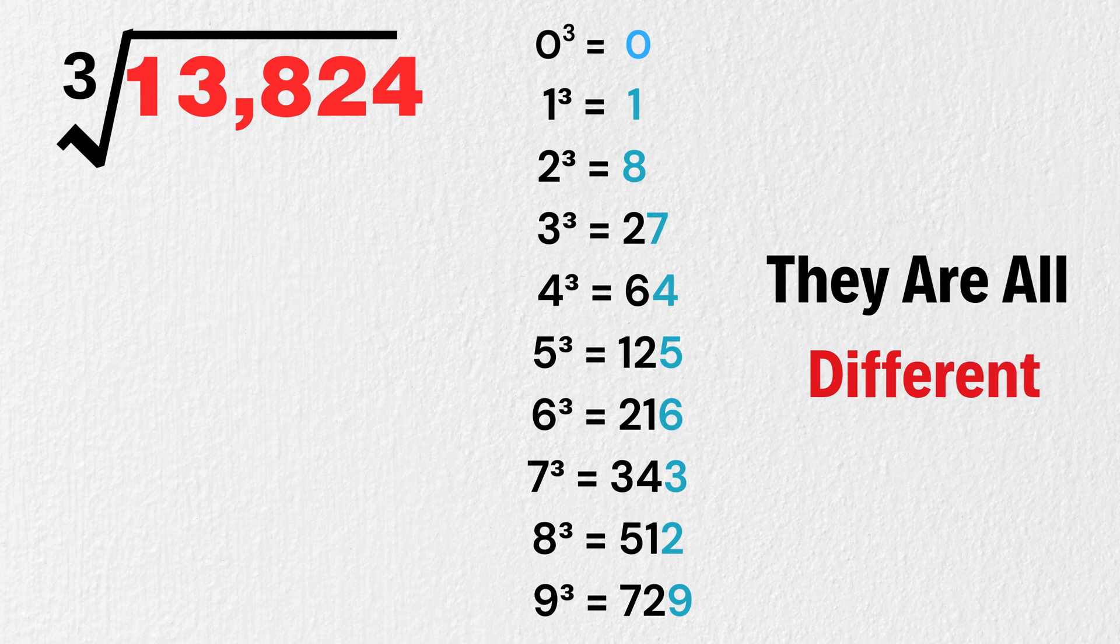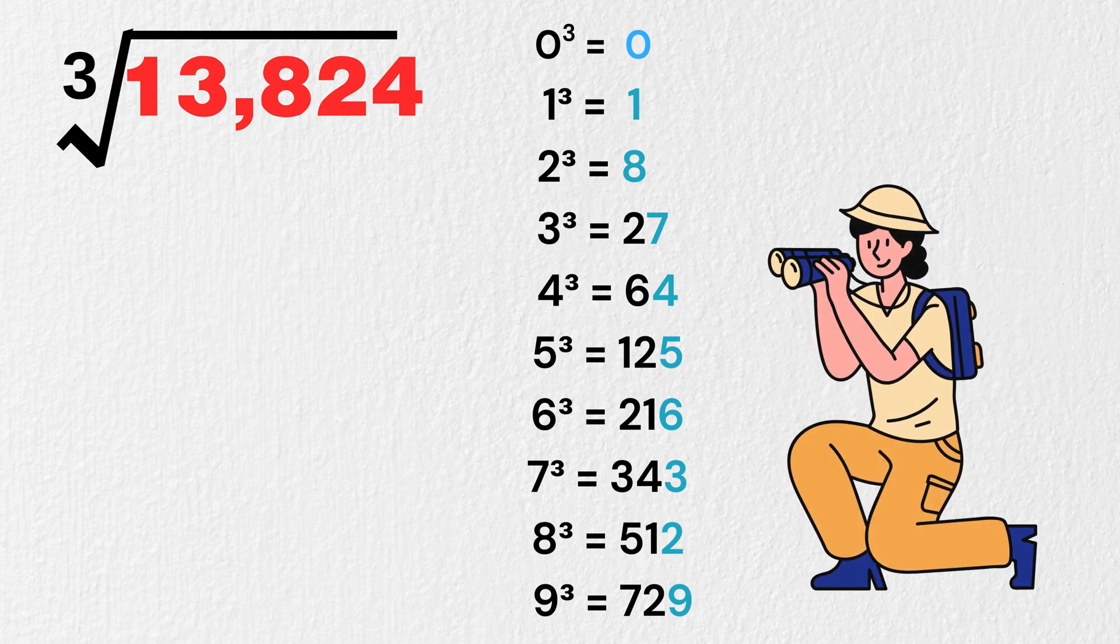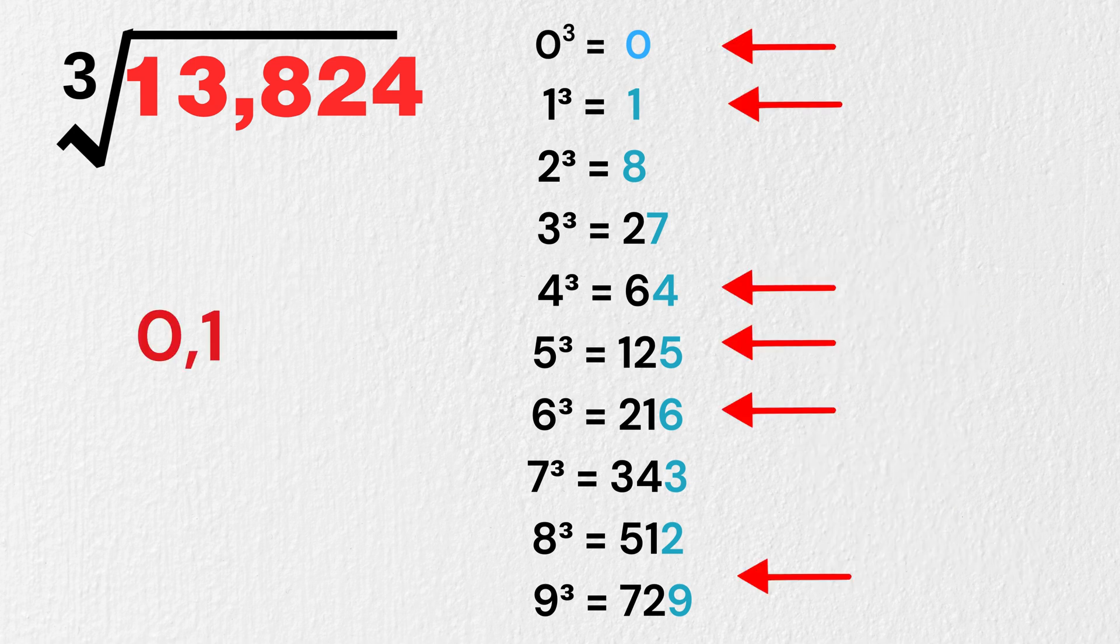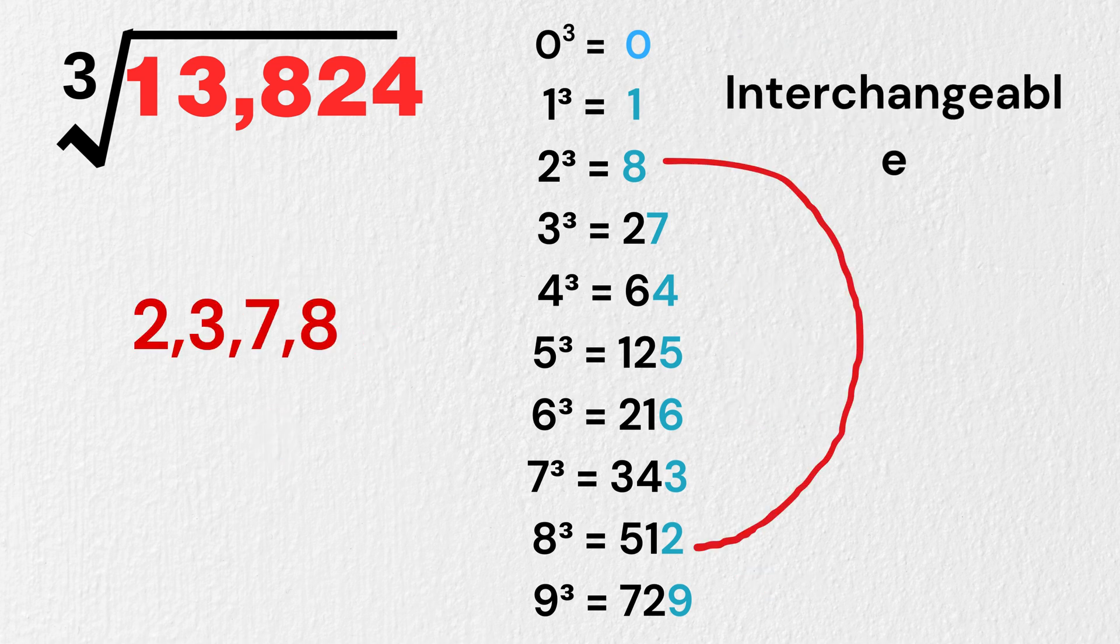And this will help us in finding cube root of any perfect cube. If you notice, this 6 numbers, their last digits is same as the number itself. For the rest, 2 and 8 are interchangeable and 3 and 7 are also interchangeable.